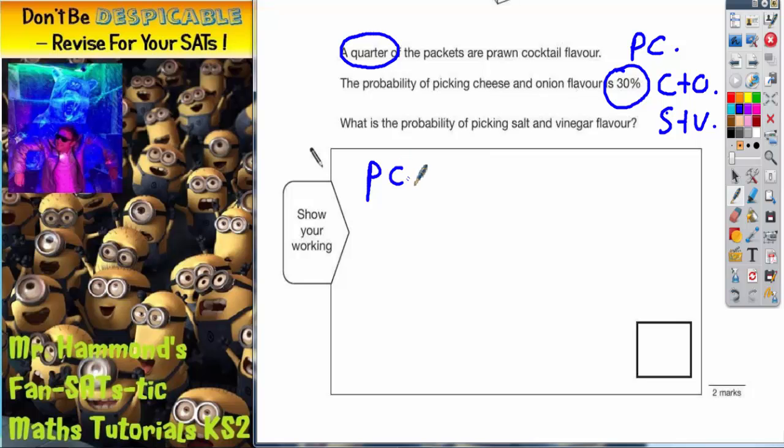Prawn cocktail we already know is a quarter, but this one is in a percentage. Cheese and onion is in a percentage, prawn cocktail is in a fraction. So let's turn everything into percentages.